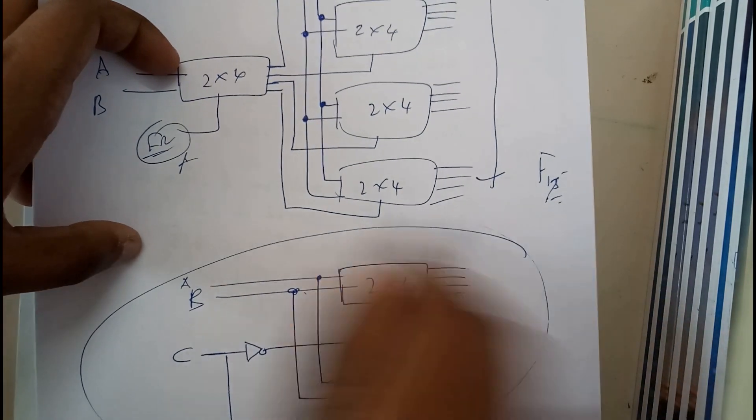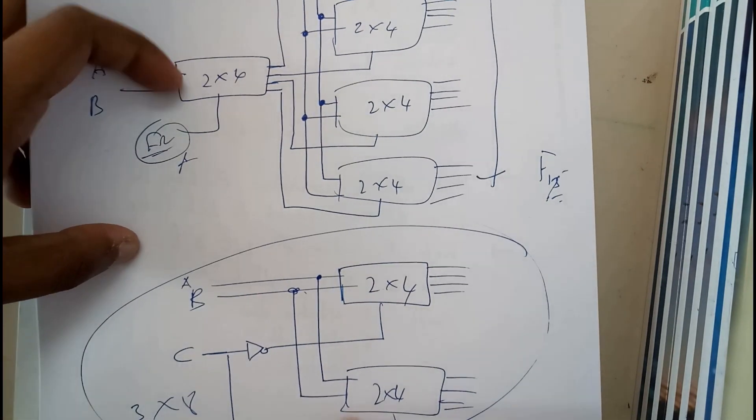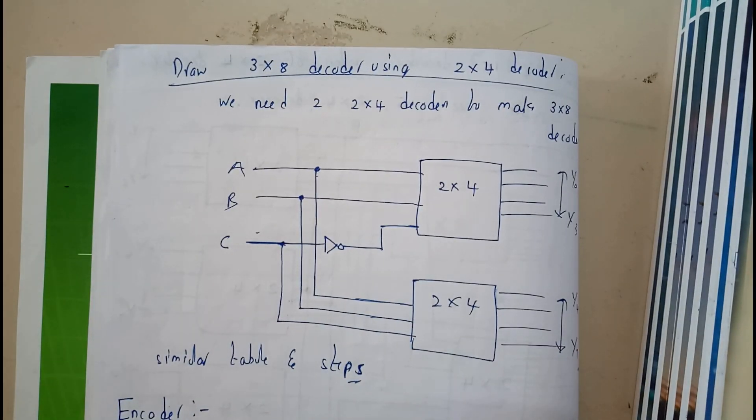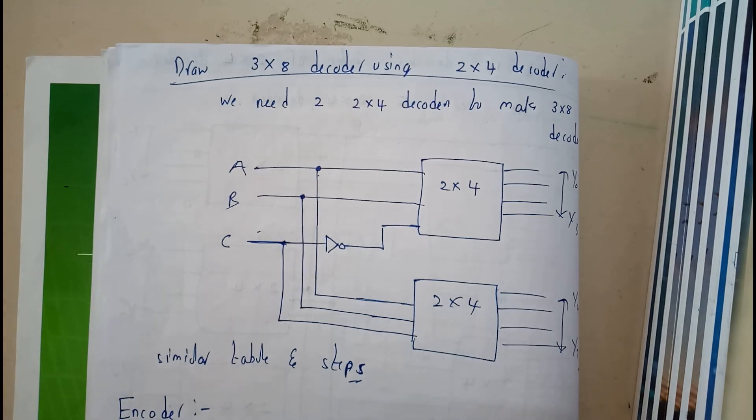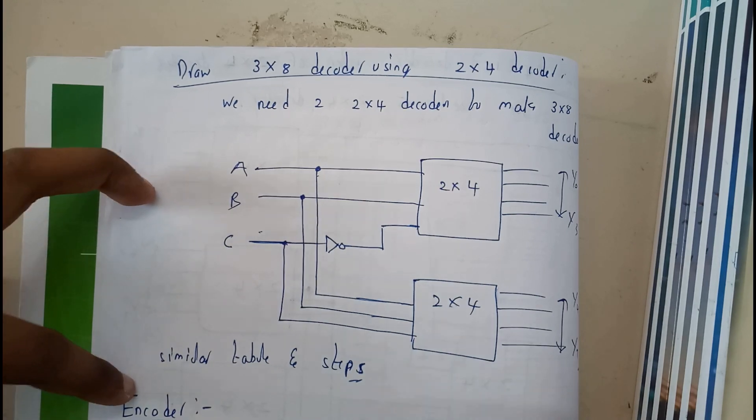So this is the diagram for 3 into 8 decoder using two 2 into 4 decoders. So now I hope everyone is now clear with this diagram. So I hope everyone can draw the truth table, which is nothing but it will be having C as enable, C, A, B, and all the 8 combinations it should have.